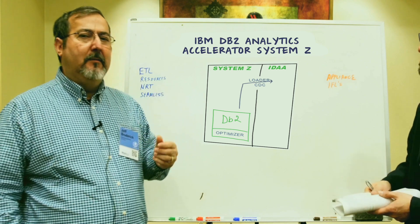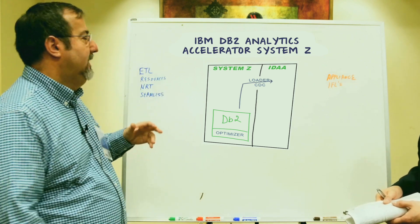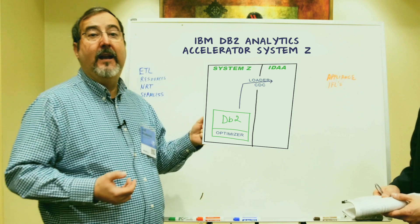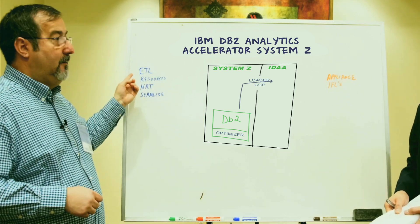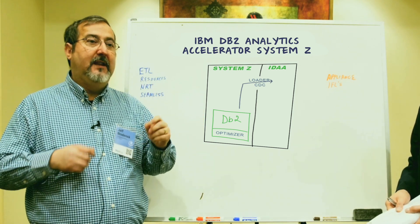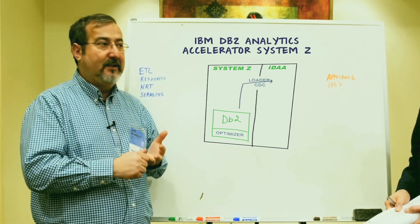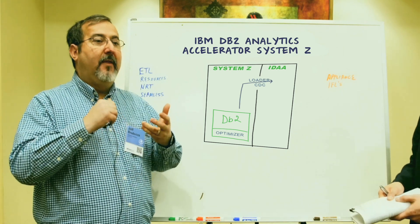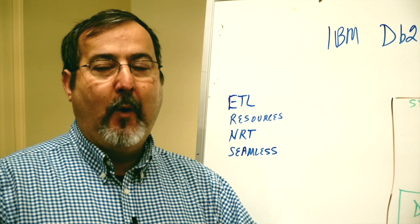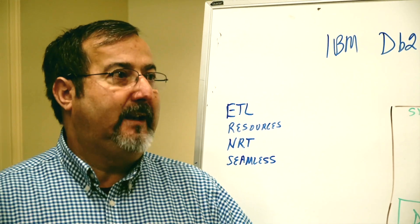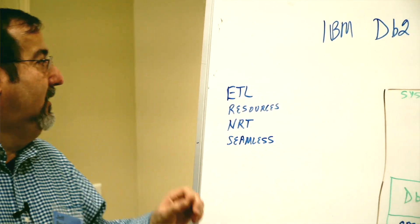Part of the beauty of the Analytics Accelerator is it dramatically improves the ability to eliminate a lot of the extract, transform, and load jobs — the ETL jobs. Additionally, it enables the DB2 DBA resources to focus on what they do best, which is designing operational and production-type data sets, tables, and structures. That's where the core of your business is built on, and that's where they need to be doing the really great design work. They can enable these with the accelerator by just a checkbox within Data Studio to be accelerated for their end-user queries, so there's a significant resource savings.